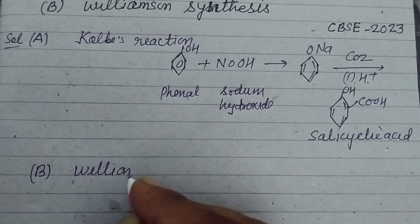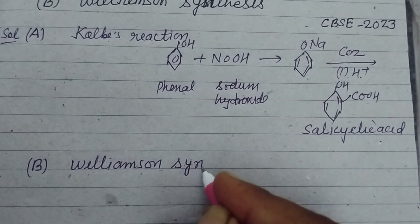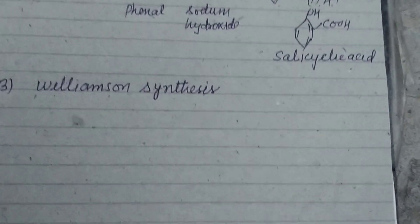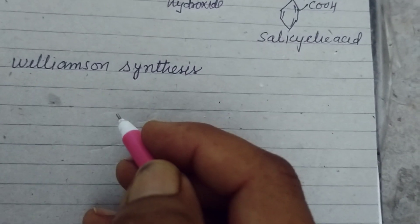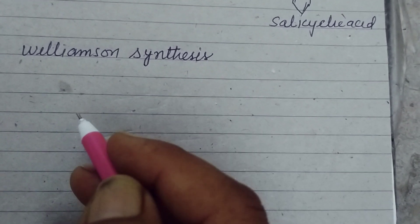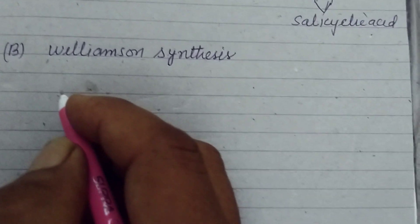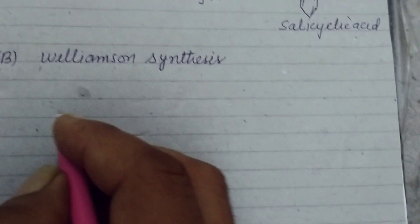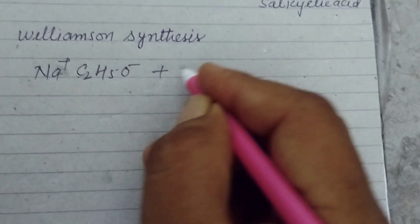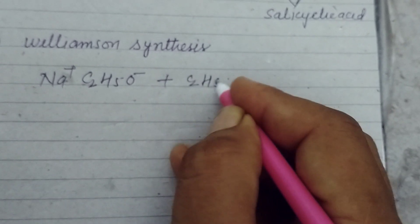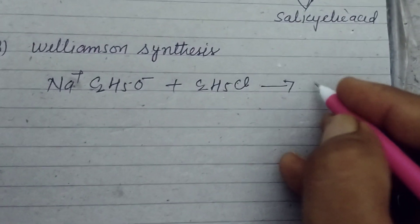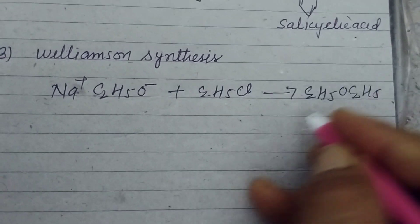Now for Williamson synthesis. In Williamson synthesis, the reaction uses a deprotonated alcohol and an organohalide to form an ether. So when sodium ethoxide (Na⁺ C₂H₅O⁻) reacts with ethyl chloride (C₂H₅Cl), it gives C₂H₅–O–C₂H₅ plus NaCl.